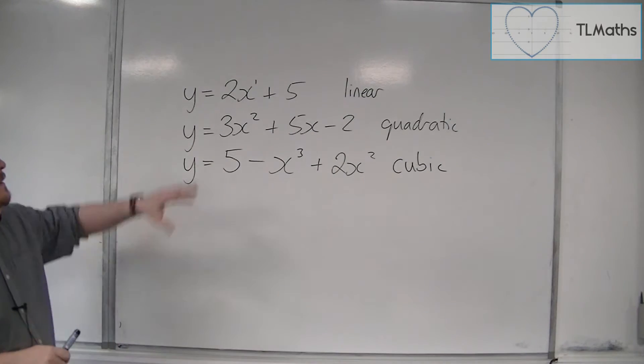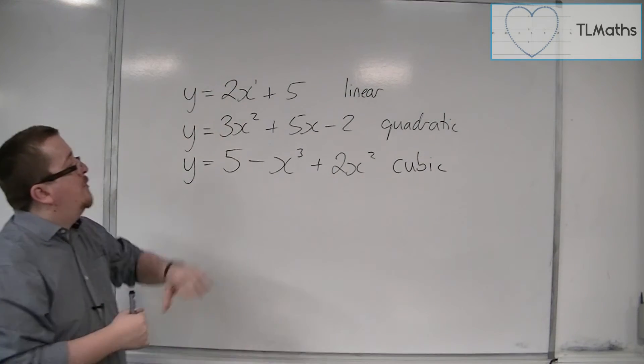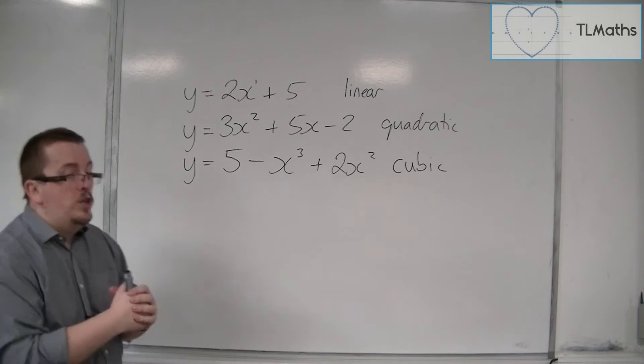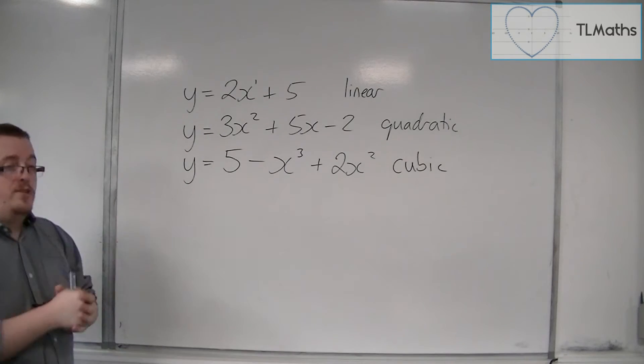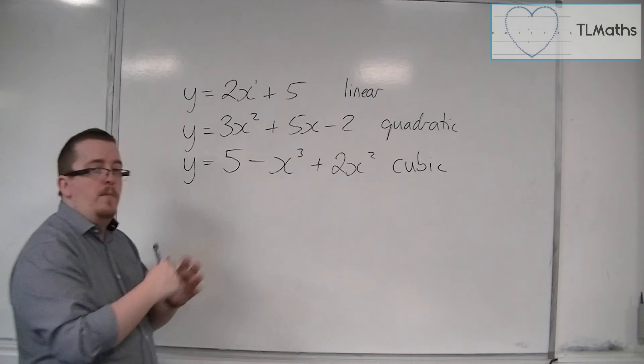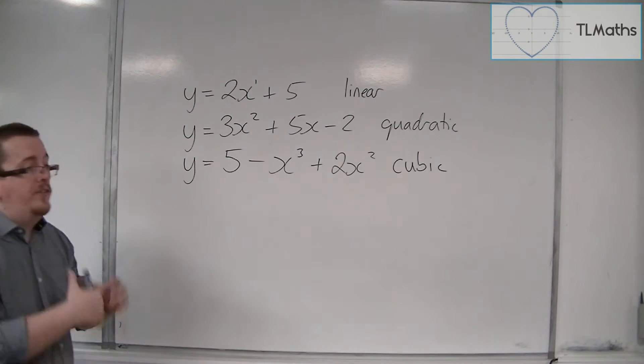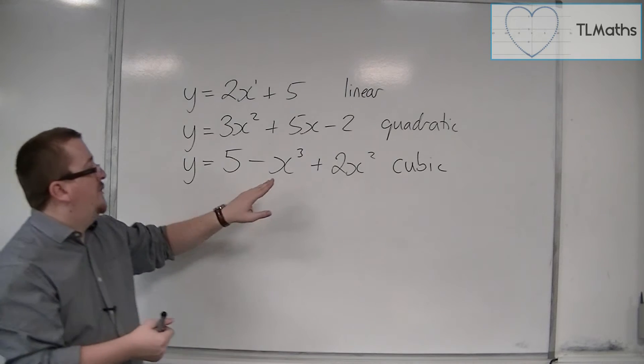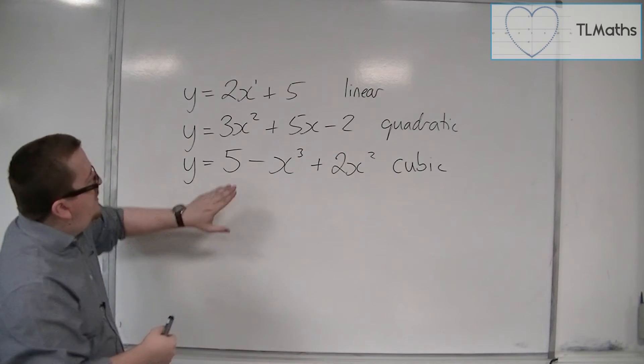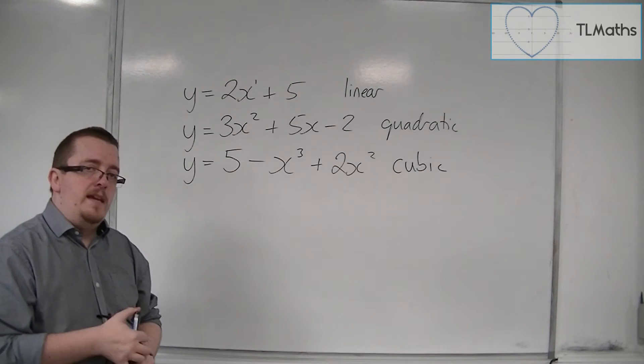So we have a linear function here, a quadratic function, a cubic. Notice also that there's no linear term, as I might refer to it. There's no 2x or 5x. There's no singular x by itself. There's just an x cubed, an x squared, and this constant term here.